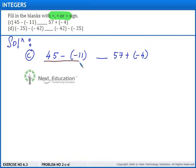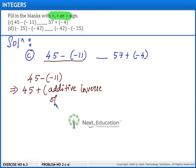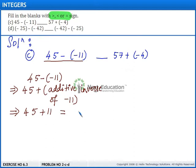Let us find the value of 45 minus of minus 11. This can be written as 45 plus of the additive inverse of minus 11. Since subtracting an integer is the same as adding its additive inverse, the additive inverse of minus 11 is plus 11. So we get 45 plus 11, which gives us 56.